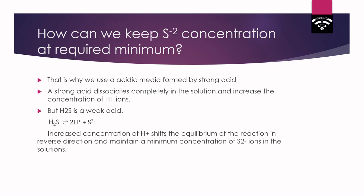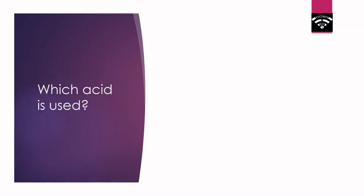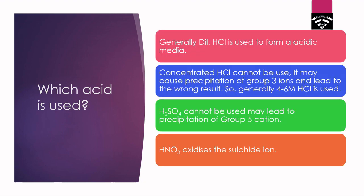In the lab, we take a small amount of the sample solution and pass H2S through it. If any precipitation occurs, we proceed to acidify the whole solution and then pass H2S through the whole solution; otherwise, we generally avoid this step. The acid we use in the lab is dilute HCl to create the acidic media.